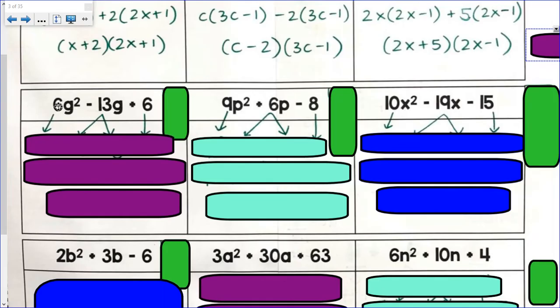Next problem. 6 times 6. So 6 times 6 is 36. Here are my factor pairs of 36. 1 and 36. 2 and 18. 3 and 12. 4 and 9. 6 and 6. Can you tell which one is going to get us a negative 13?